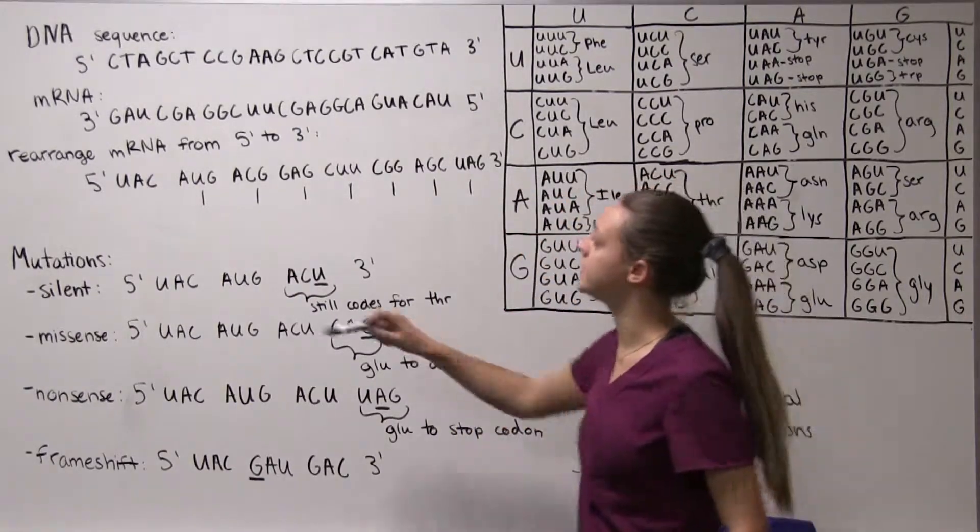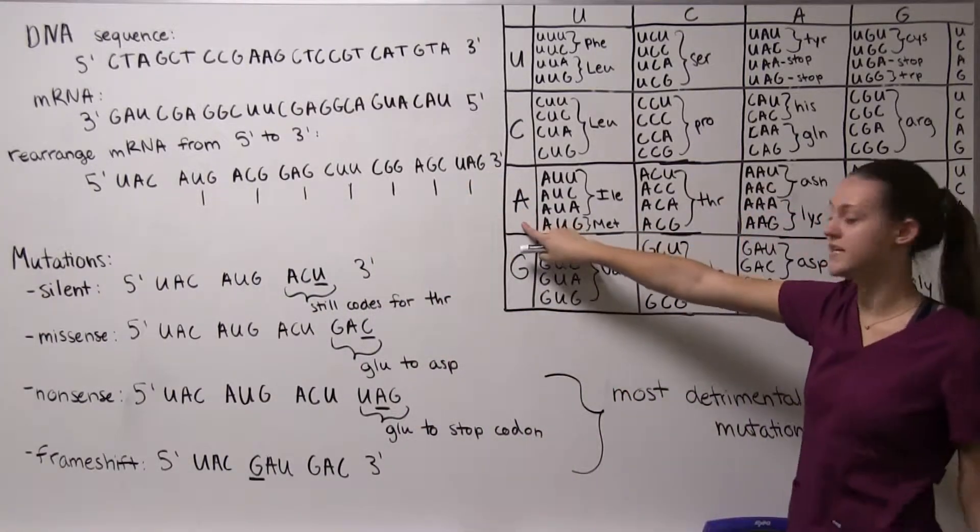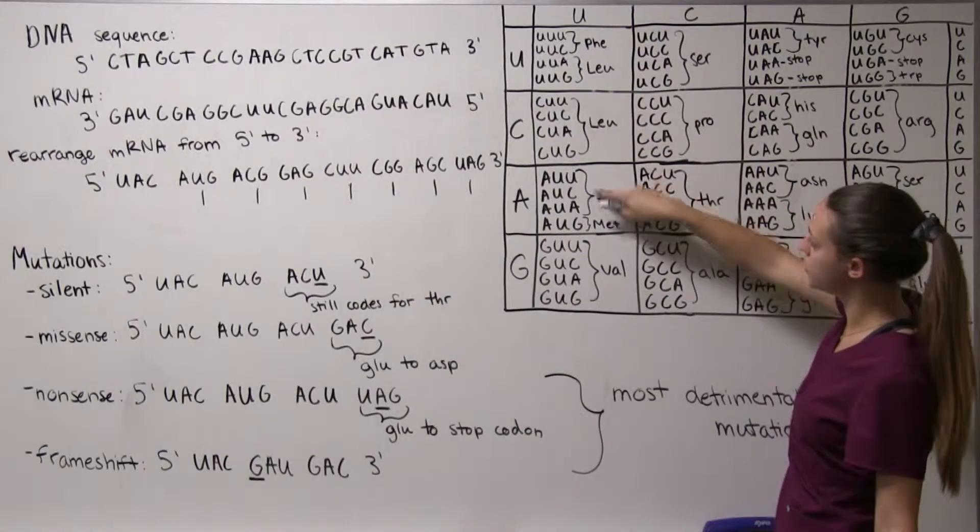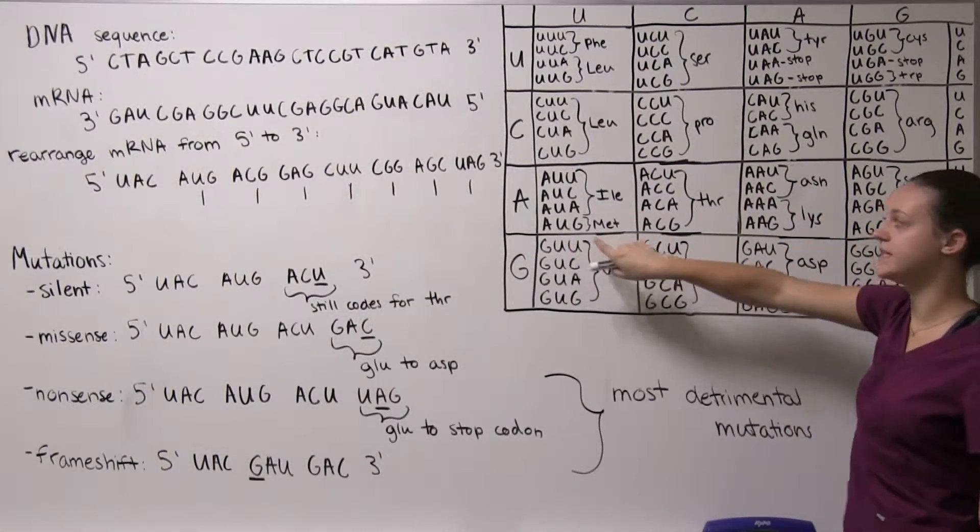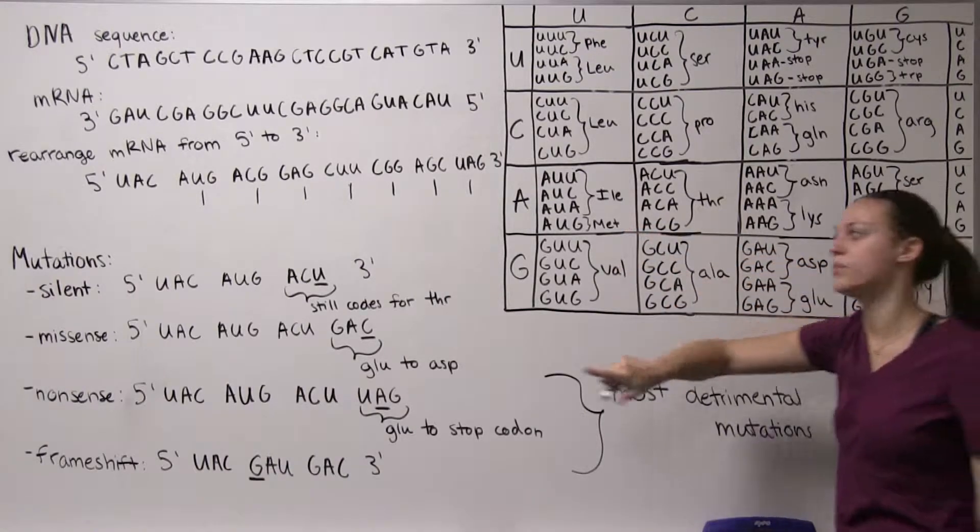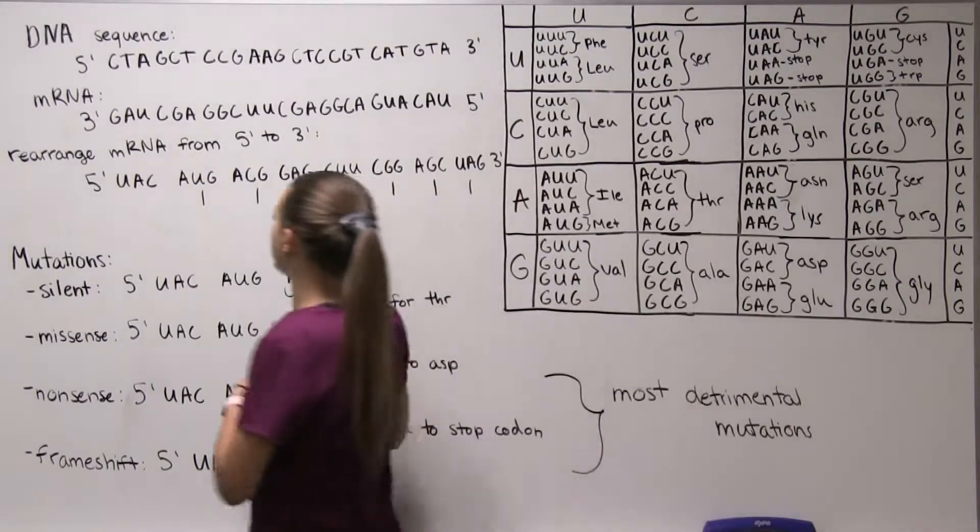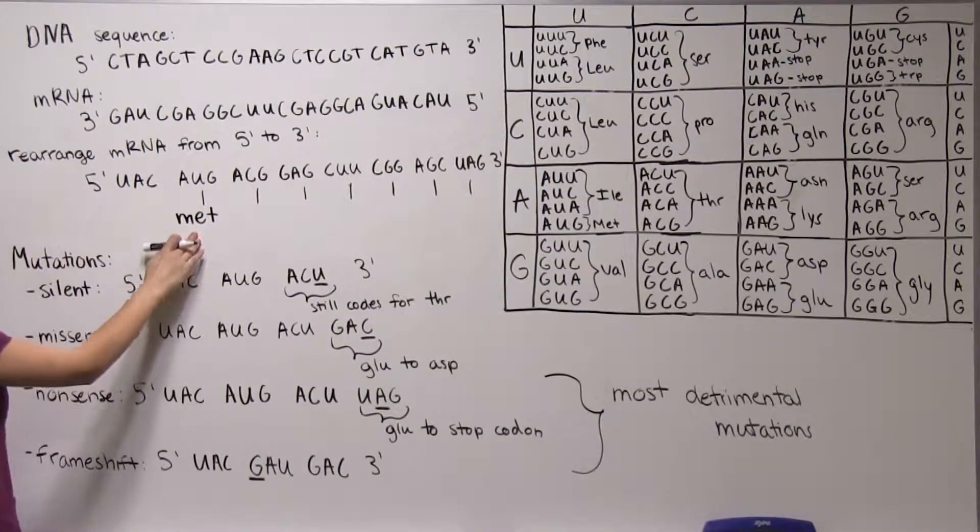So we go to the next one and we have AUG here. AUG, we start here our first letter A, our second letter U, and then our third letter here is G and this codes for MET. So now we can start our sequence and our polypeptide chain so AUG is going to code for MET. This is MET in eukaryotes and FMET in prokaryotes.